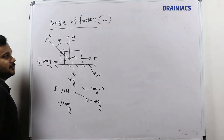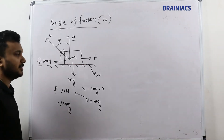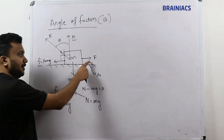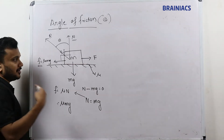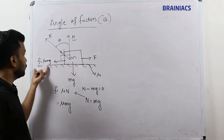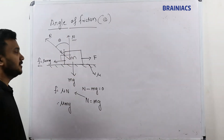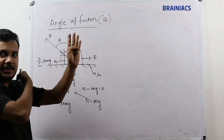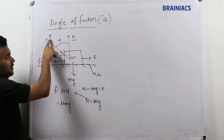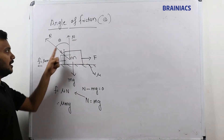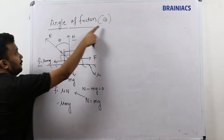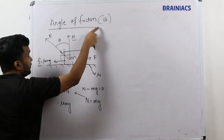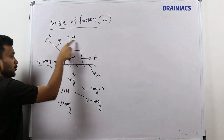The frictional force is always opposite to the relative motion of the two bodies. Here, one body is the ground and the other is mass m. So F = mu·mg acts backward and N acts upward, giving a resultant force. The angle made by this resultant with the normal reaction is the Angle of Friction — not the angle with the friction force itself.